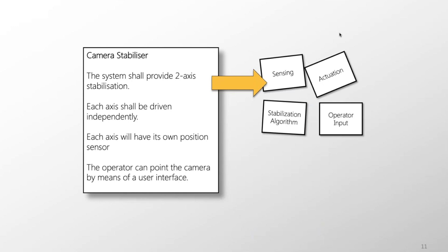From an engineering perspective, the system has to solve a set of problems: sensing the environment, actuating and driving the camera, handling operator input, providing a user interface, and providing stabilization. Each of those problems will have unknown unknowns — things we don't know about. Requirements analysis, design, and development is about isolating and removing those unknown unknowns.